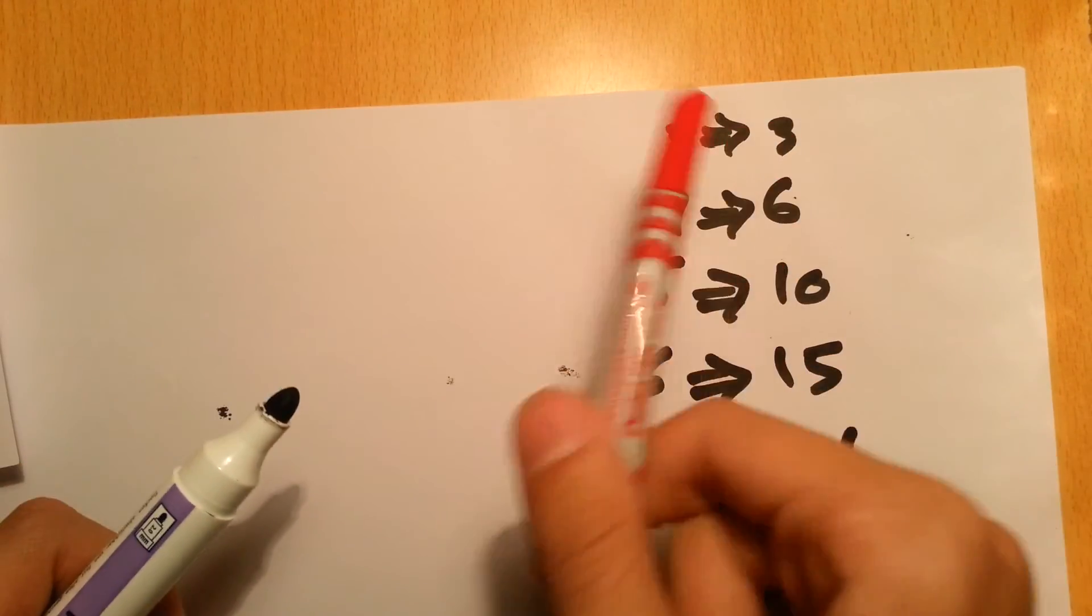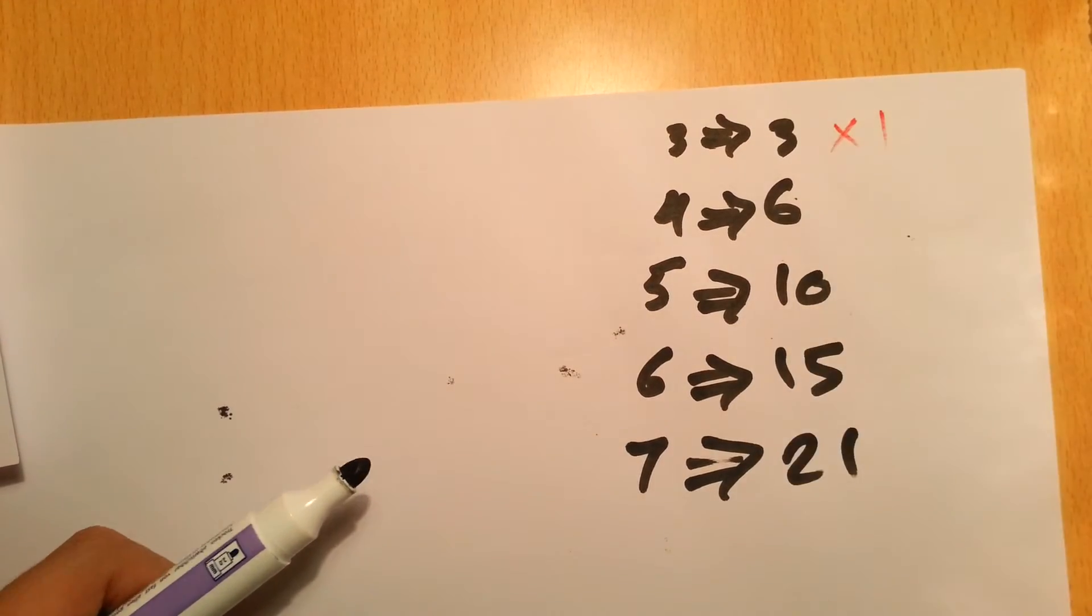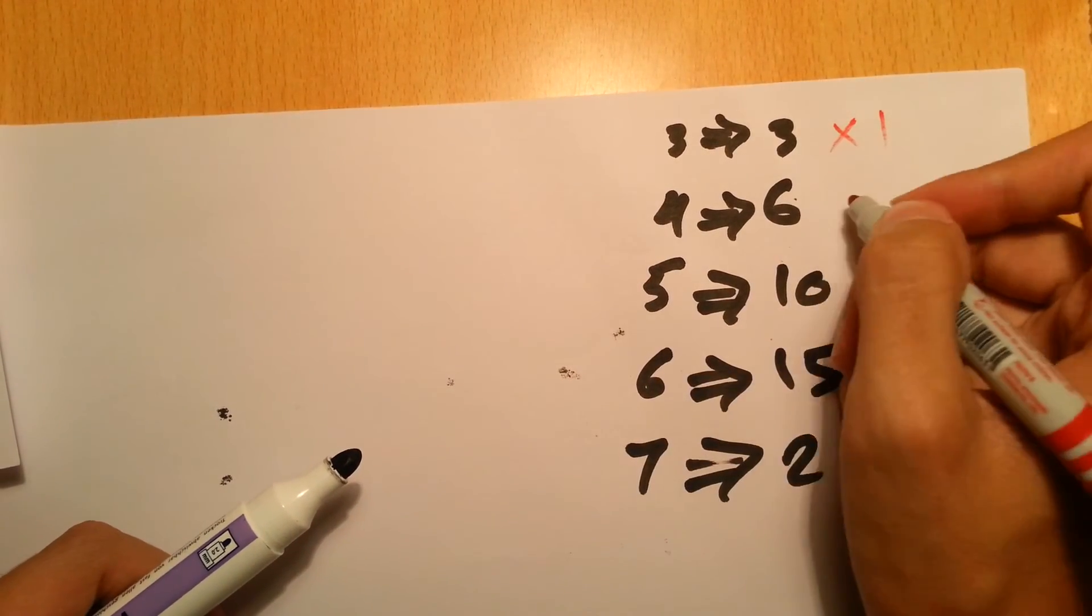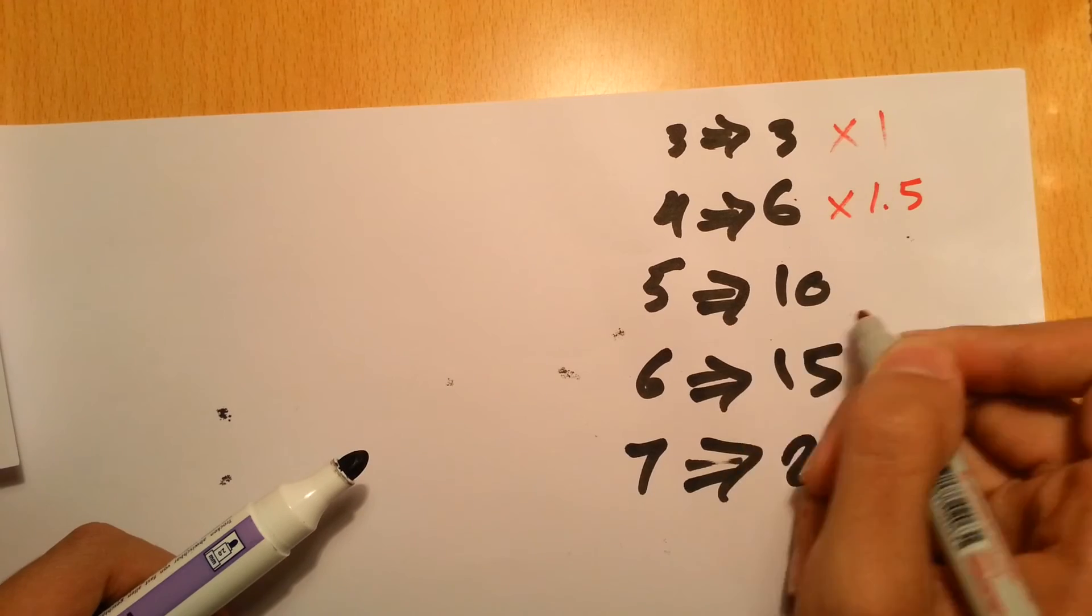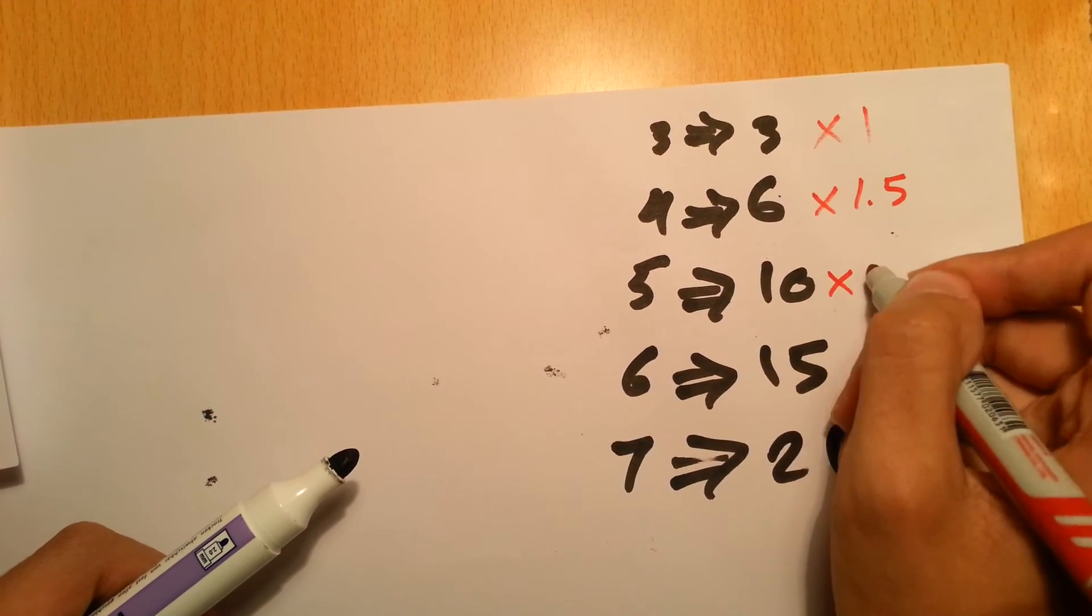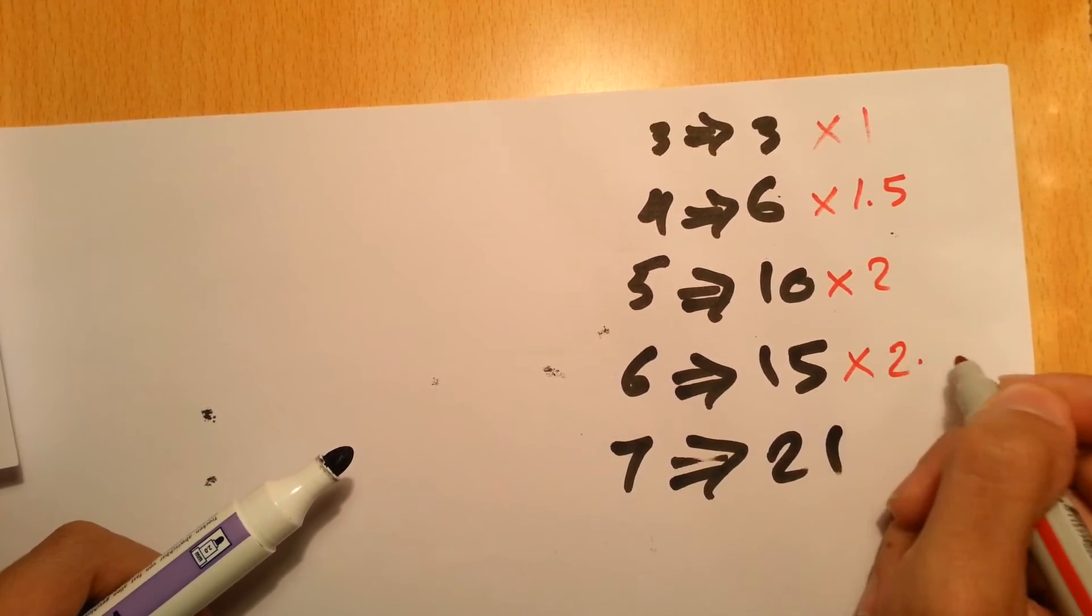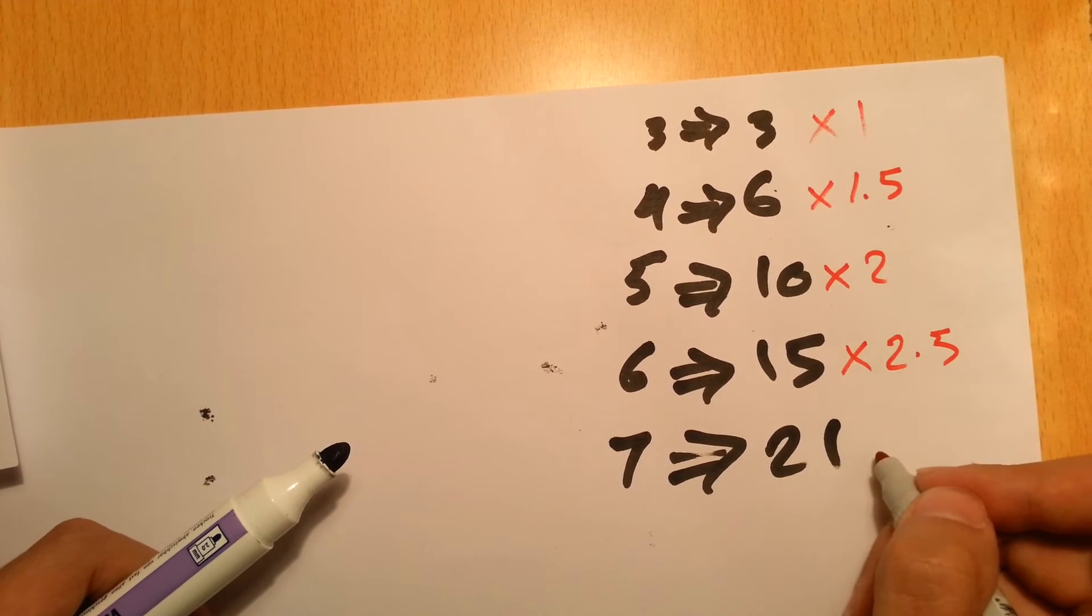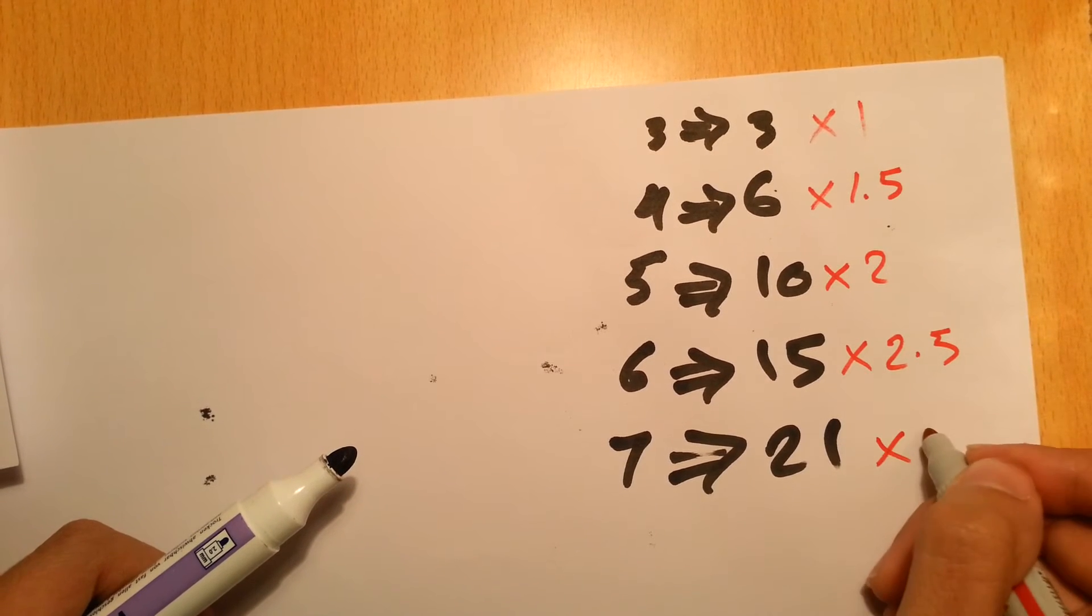The three, how do we get three from three? We multiply by one. For six from four multiply by one point five. We get ten from five by multiplying by two. Fifteen from six by multiplying by two point five. Twenty-one from seven by multiplying by three.